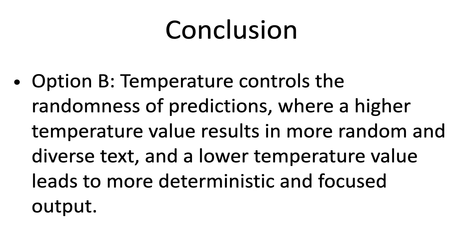This reasoning leads to Option B — temperature controls the randomness of predictions, where a higher temperature value results in more random and diverse text, and a lower temperature value leads to more deterministic and focused output — as the correct answer.